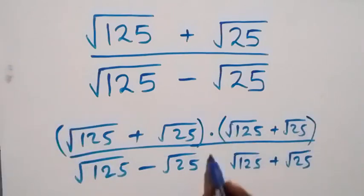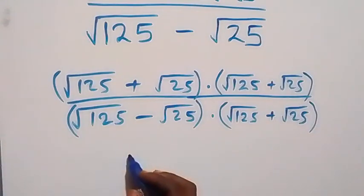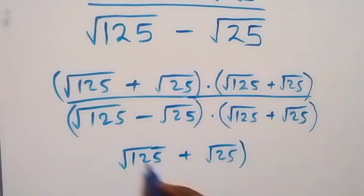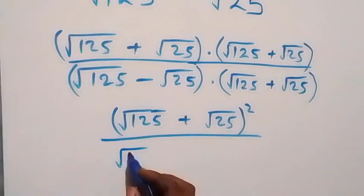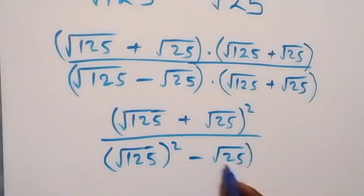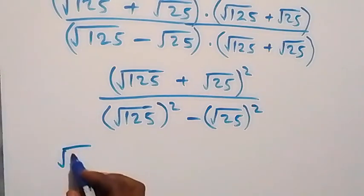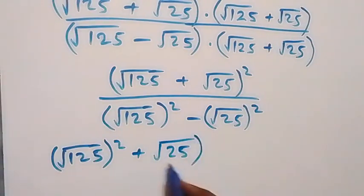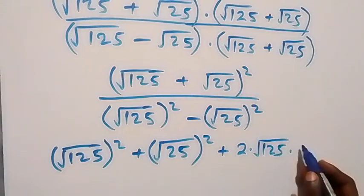We can make use of brackets in this multiplication. What we have in the numerator we can write as root 125 plus root 25, all squared. Divided by what we have here — following the difference of squares, we write it as root 125 squared minus root 25 squared. The numerator expansion becomes root 125 squared plus root 25 squared plus 2 times root 125 times root 25.